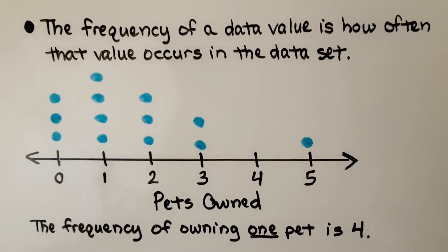The frequency of a data value is how often that value occurs in the data set. The frequency of owning one pet is four.